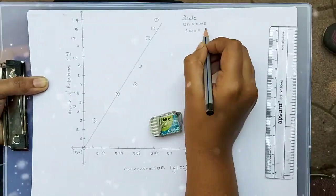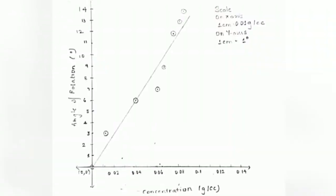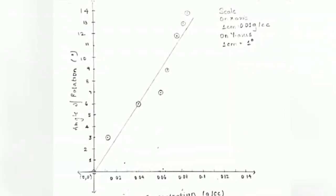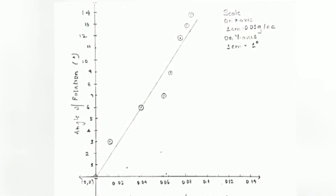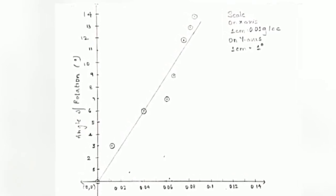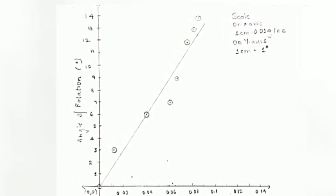Concentration versus angle of rotation has been plotted. We can observe that we get a linear graph, which means when the concentration increases, the angle of rotation also increases.